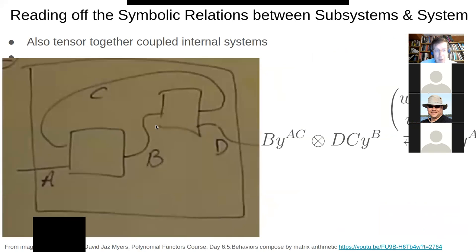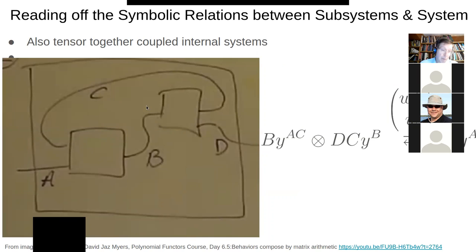Regardless whether they're coupled one way or bidirectionally, we take their tensor product. And so we could consider each of them as a dynamical system. So this one here has output B and input A.